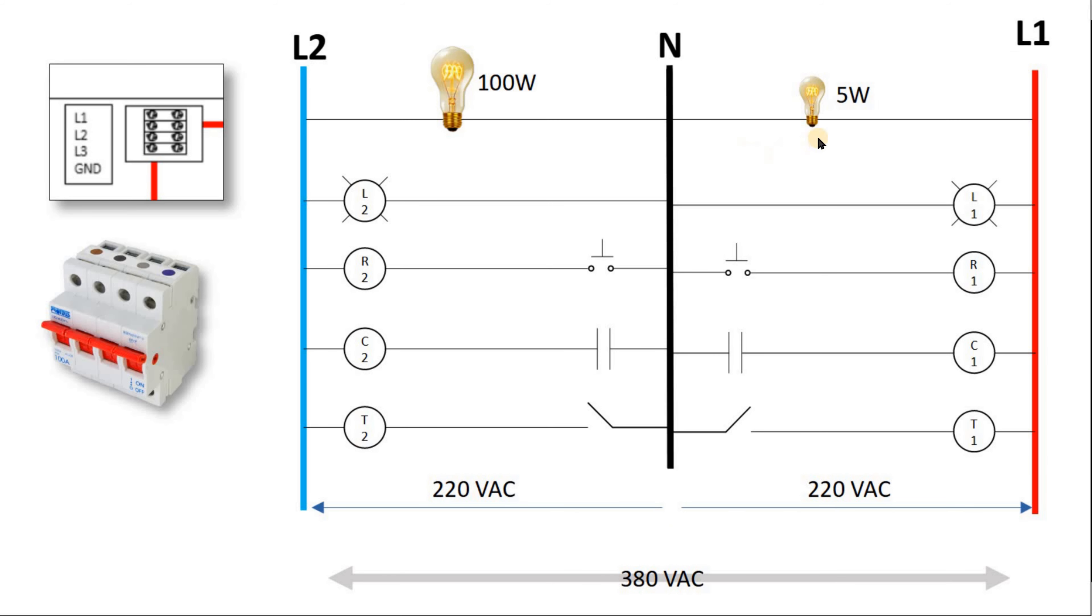Now let's look if you have one lamp, 5 watts between L1 and N, and 100 watts between L2 and N. Everybody is happy. This is 5 watts glowing, 100 watts is glowing more, but everything is fine.